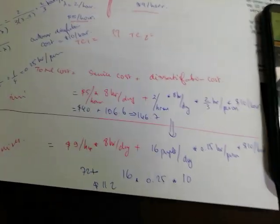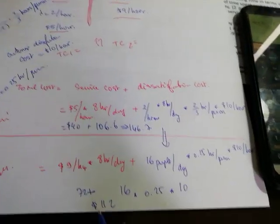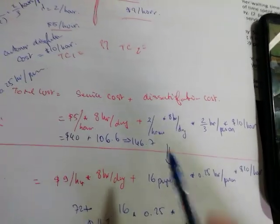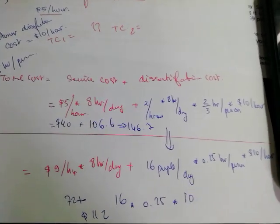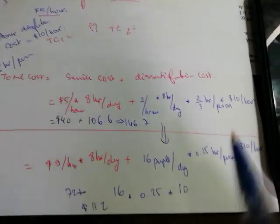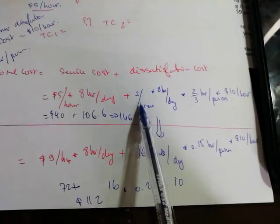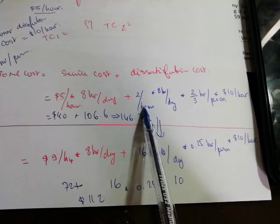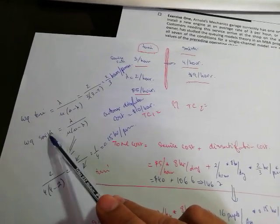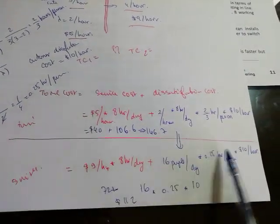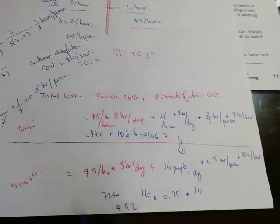I will repeat: in this example, the faster, more expensive mechanic is more feasible for us. We calculated the service cost plus dissatisfaction cost. We have two people per hour, eight hours per day, and we calculated WQ from the formula for Tony and Smith, then multiplied by the dissatisfaction cost for both of them.